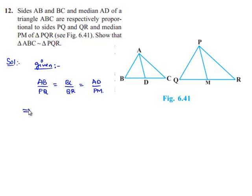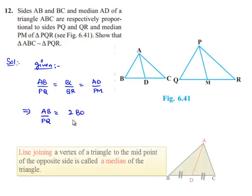Now that implies AB by PQ is equal to, BC can be written as 2 times BD as AD is a median, so BC by QR can be written as 2 times QM, that is equal to AD by PM.